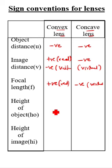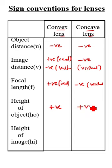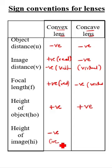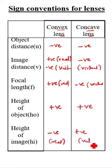Height of object HO is positive. Here also positive for concave. Height of image HI is negative for real, positive for virtual.